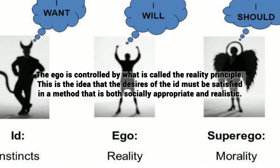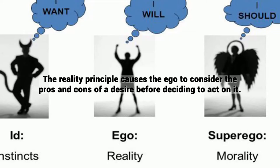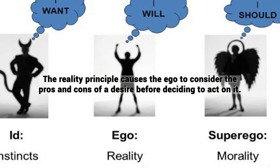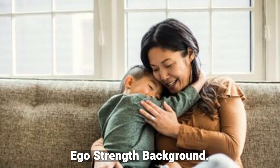The ego is controlled by what is called the reality principle. This is the idea that the desires of the id must be satisfied in a method that is both socially appropriate and realistic. The reality principle causes the ego to consider the pros and cons of a desire before deciding to act on it. The ego does not try to stop these desires, but tries to achieve them in realistic and acceptable ways.